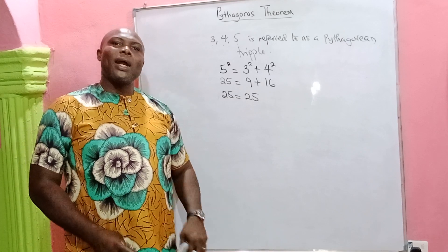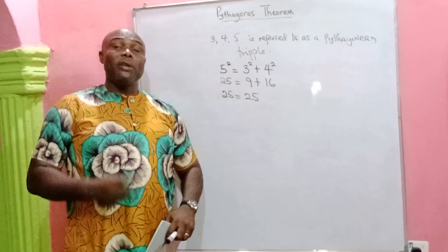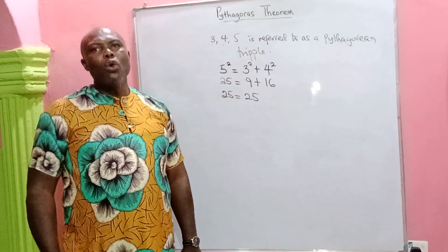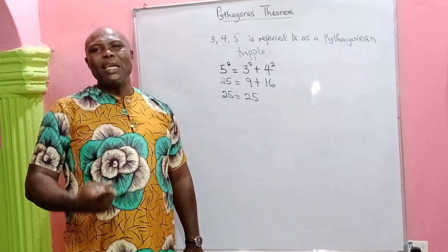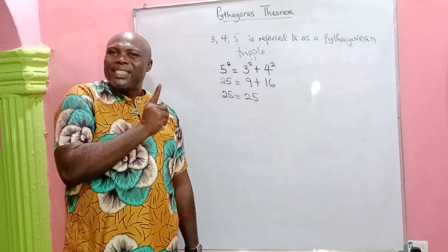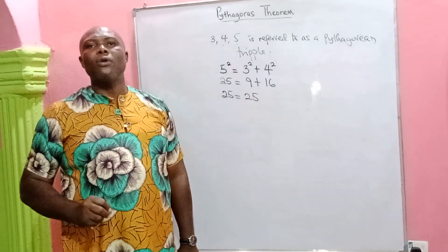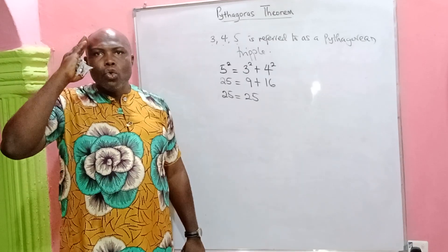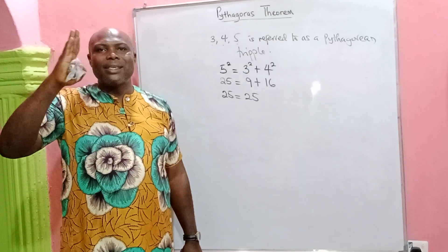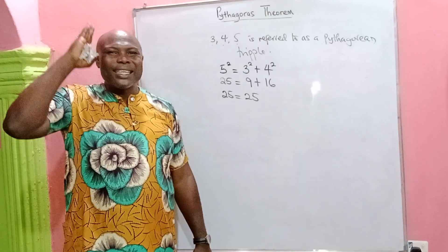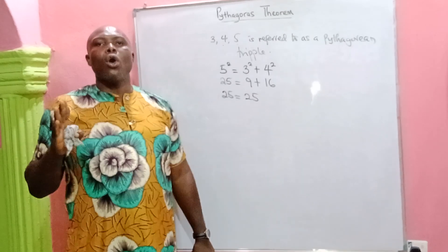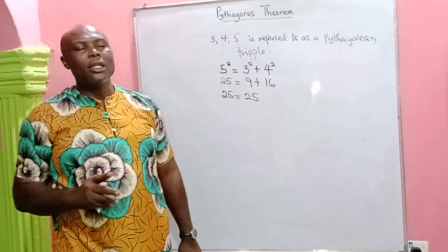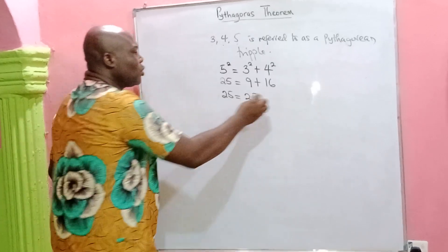Other Pythagorean triples include 6, 8, 10; 9, 12, 15; 5, 12, 13; 10, 24, 26; and many more. If you know these triples, you won't waste time finding the missing side of a right-angle triangle when the other two sides are given.